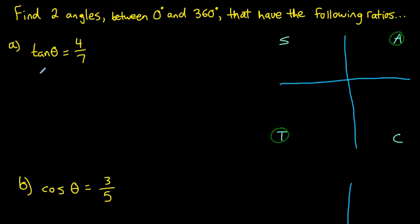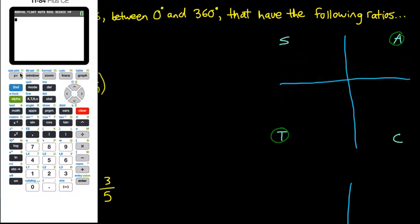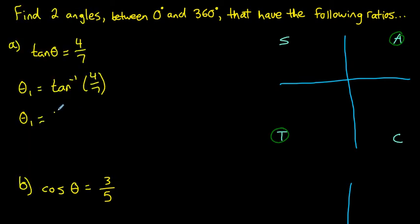You can use your calculator to get the first angle that has the given ratio 4 over 7. Use the inverse tan function: second tan of 4 divided by 7, and your calculator will give you the angle of about 29.7 degrees. That tells us the angle between the initial arm and a terminal arm rotated counterclockwise 29.7 degrees has a tan ratio of 4 over 7.